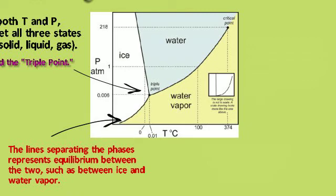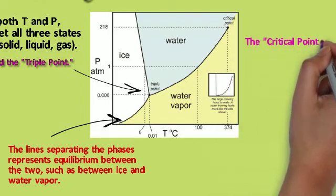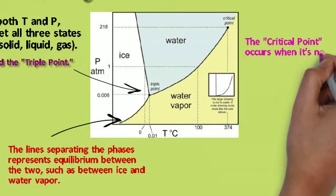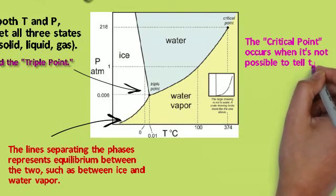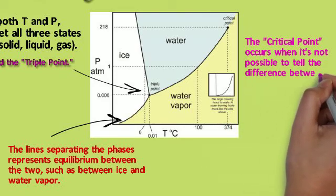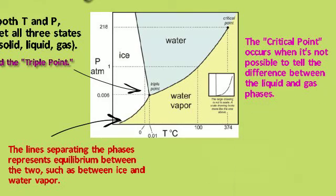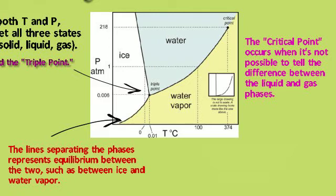And you can see that there's a line between ice and water and vapor and water as well. The critical point occurs when it's not possible to tell the difference between the liquid and the gas. They're at some funky, weird thing. They're kind of a blend at the critical point.